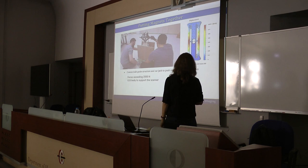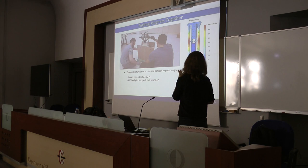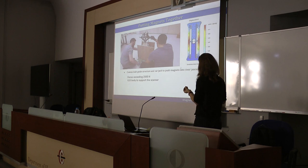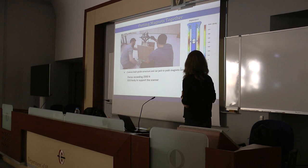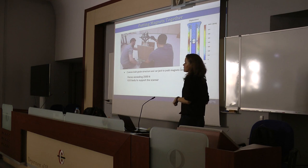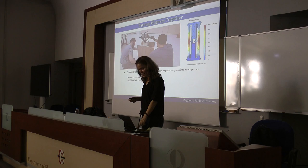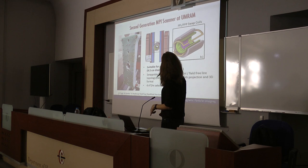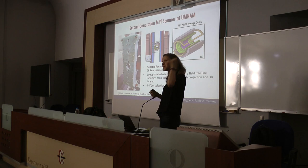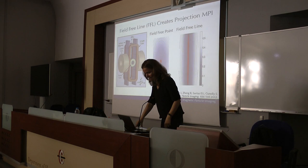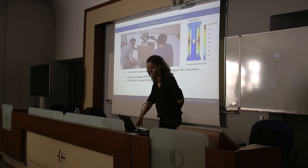Constructing the second-generation scanner has been extremely challenging. There are forces exceeding 2500 newtons, so the scanner body uses a special material called G10 to withstand these forces. Pushing the magnets into place took months — a car jack was used, and five people pushed simultaneously. Eventually, through considerable effort including hammering magnets into the scanner, the static part has been completed. We hope to get an image with this system in the next few months.